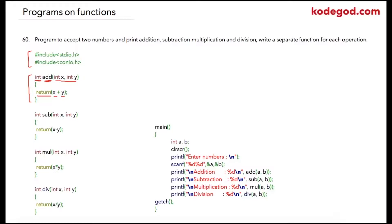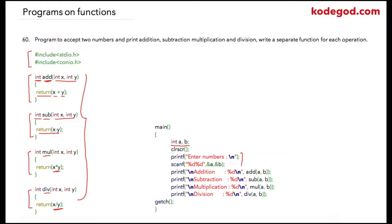Similarly, I have defined a second function named 'sub', which takes two integer input variables and after performing subtraction returns an integer — so the return statement has x minus y. Similarly we have functions for multiplication and division, named 'mul' and 'div' respectively. Once we have defined all these required functions, I have written the main function in which two integers are declared, then I ask the user to enter two numbers which are stored into 'a' and 'b'. Then I simply print addition, subtraction, multiplication, and division by calling the functions inline.